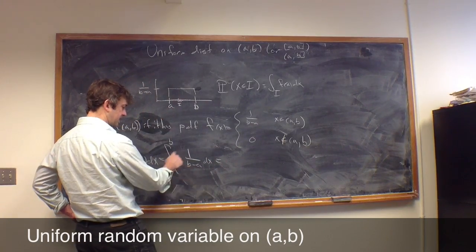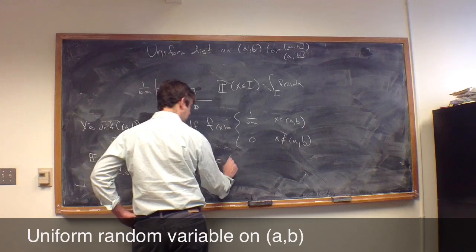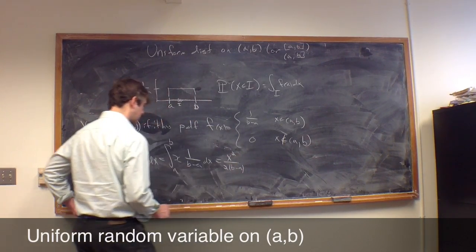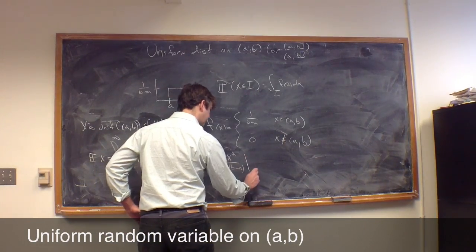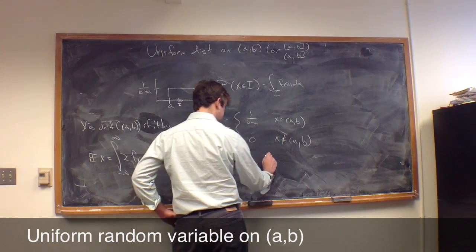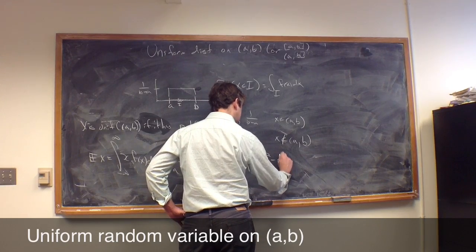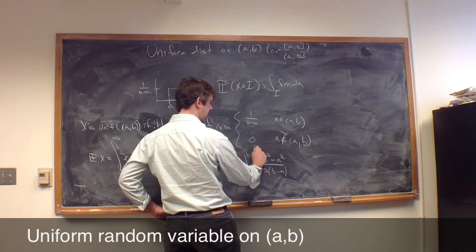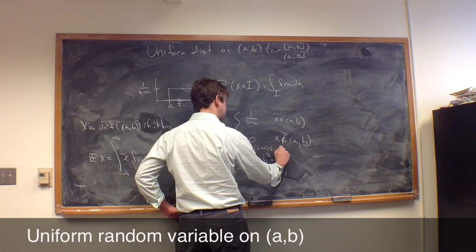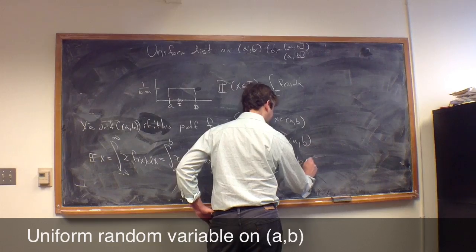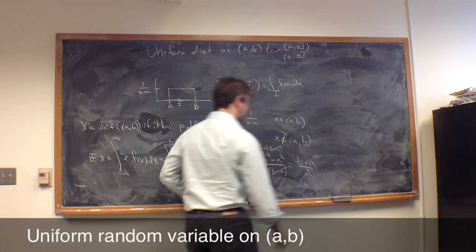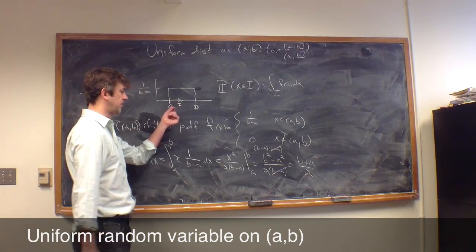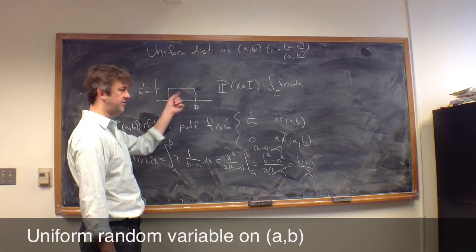I pull out this constant, integrate x which is x²/2, and I get x²/(2(b-a)) evaluated from a to b. That's (b² - a²)/(2(b-a)). Since the top factors into (b+a)(b-a), I can cancel one factor, and we're left with (b+a)/2, which is what we knew it had to be. It makes sense that if I'm picking a point uniformly, the expected value is the center value, the average value of this interval.